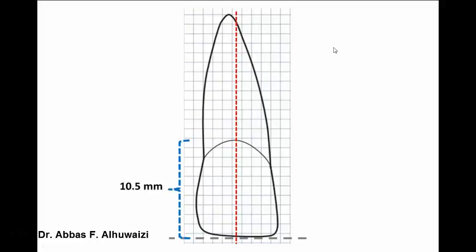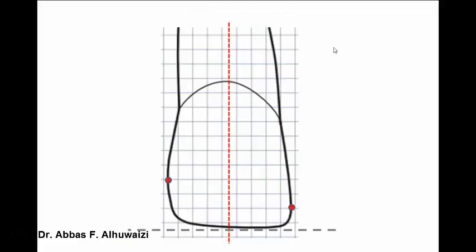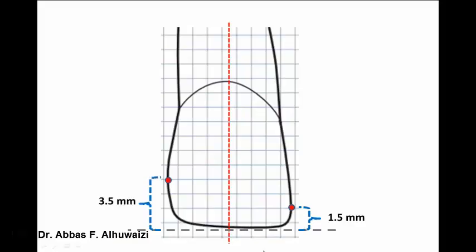The length of the crown is 10.5 mm, while the length of the root is 13 mm. This point is the peak of curvature distally, which is between the incisal and middle third of the crown. The mesial peak of curvature is very close to the incisal edge — about 1.5 mm away. The distal peak of curvature is 3.5 mm away from the incisal edge.